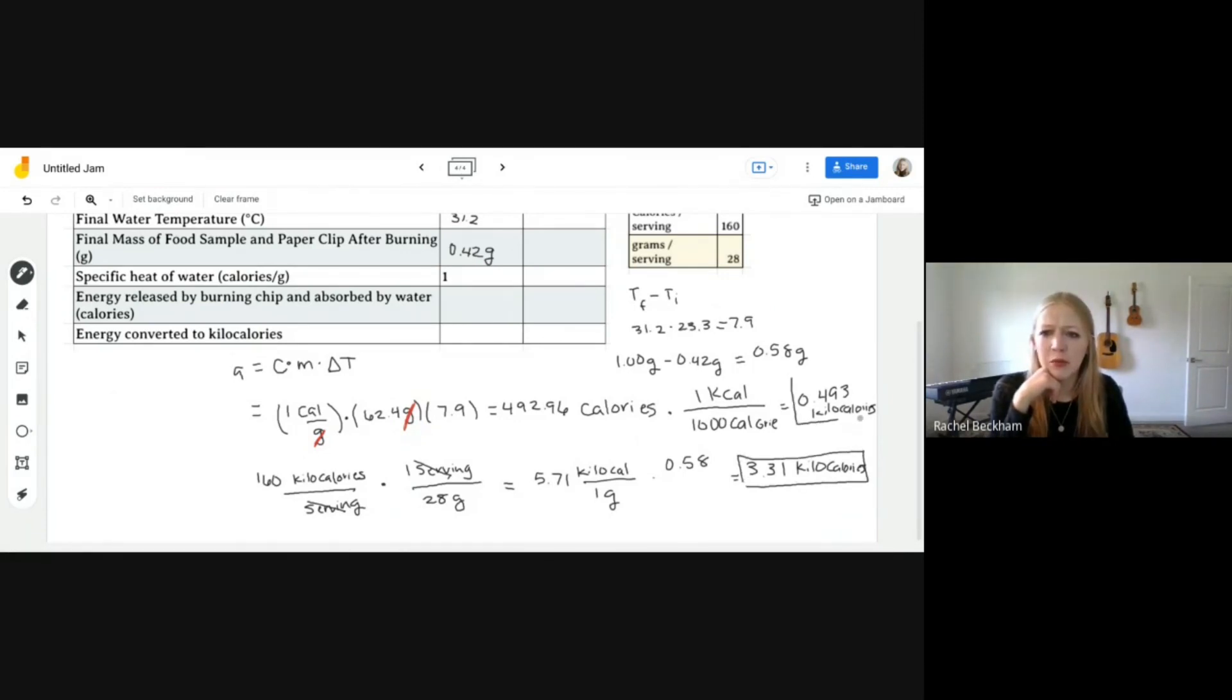But the number that we got was 0.493 with our experiment. So it looks like we had some significant error there with our experiment. That error could be associated with a lot of the temperature actually leaving the calorimeter without it being measured because it wasn't being absorbed by the water. So it wasn't a perfect calorimeter in that way. And I think that most of our error probably came from that right there.